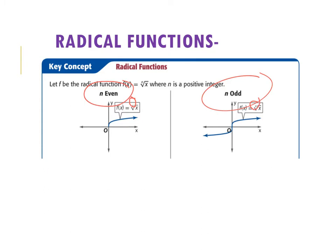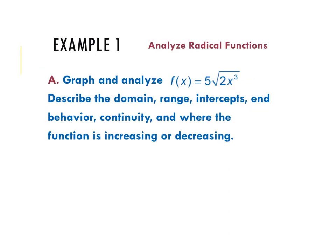So all we're going to do here is we're going to have an example where we have a graph, and then we're going to tell everything there is to know about it. Graph and analyze f of x equals 5 square root 2x to the third. The first thing I'm going to ask myself is, is this an even or odd radical function? And because there is no number right here, it is presumed to be a 2, which means it's an even function, so my function will look something more or less like that.